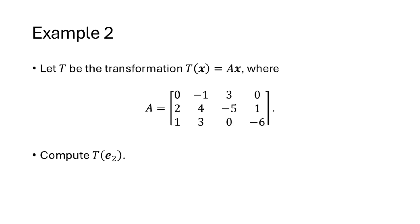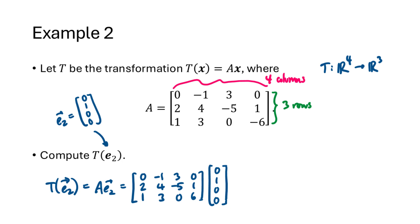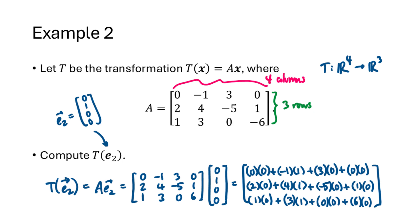Suppose we have the transformation t(x) = Ax, where A is the given matrix, and we want to compute t(e2). First we need to understand which e2 we're talking about. The matrix has four columns and three rows, which means t is a transformation whose domain is R4 and codomain is R3. So e2 must be the e2 in R4, namely the vector (0,1,0,0). When we compute t(e2) = A times e2, we get the second column of A.